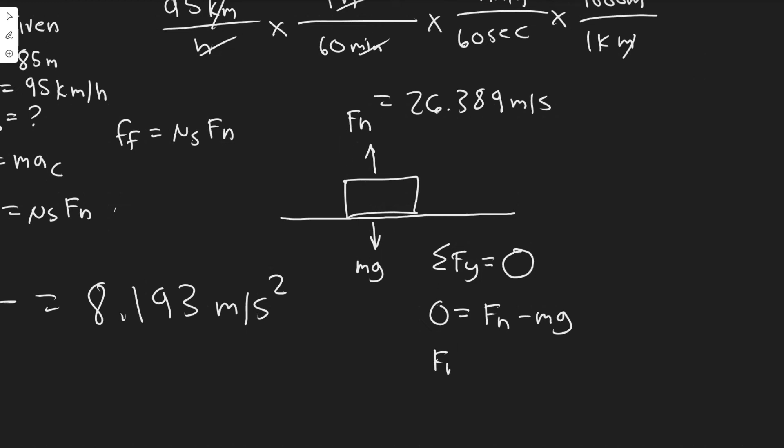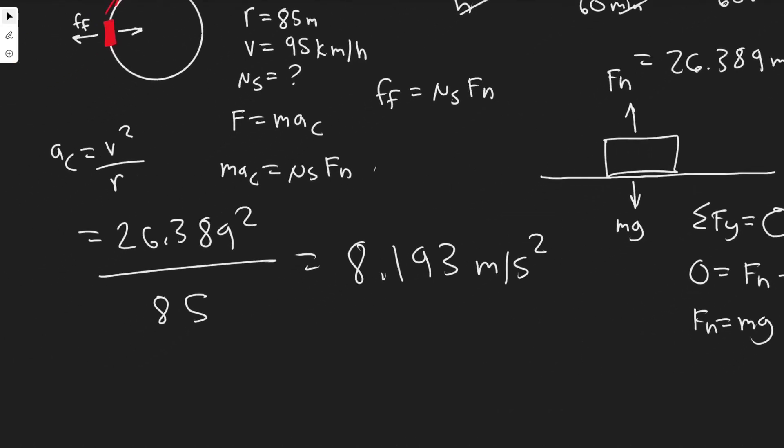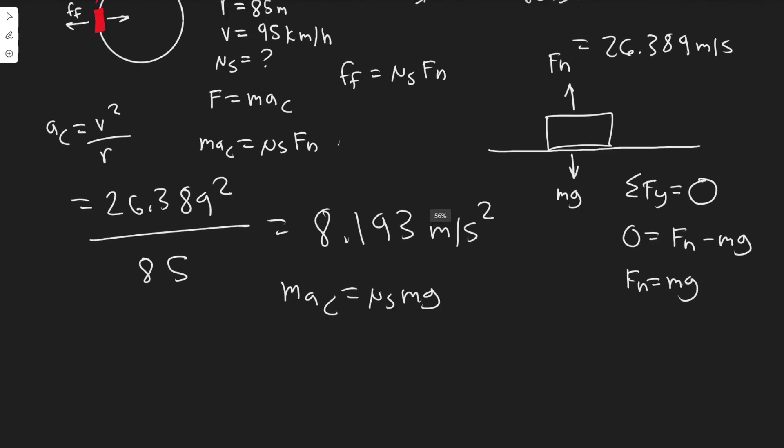Basically we have m·aᴄ equals μₛ times mg. We don't actually need to know the mass because it's irrelevant—the masses will just cancel on each side. So the mass actually doesn't matter. The centripetal acceleration equals μₛ times g.